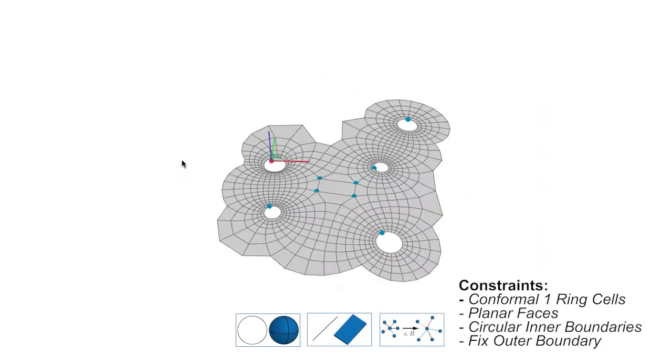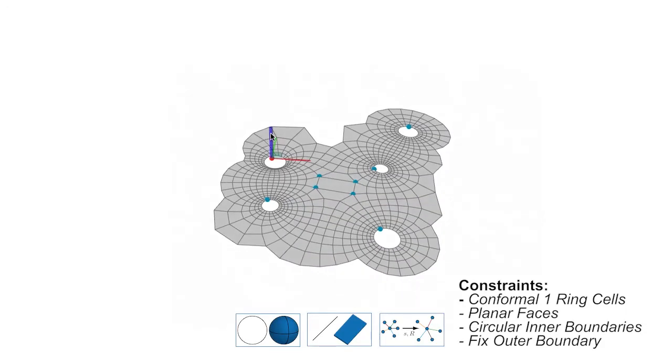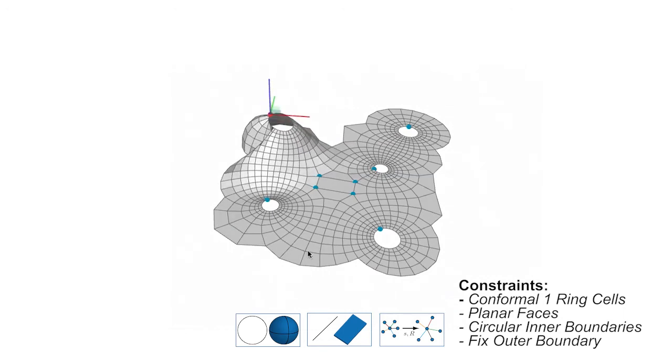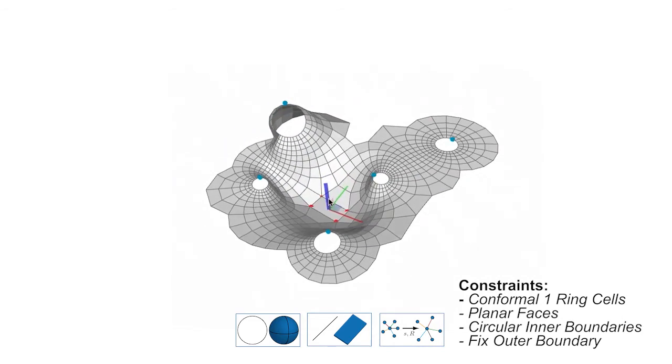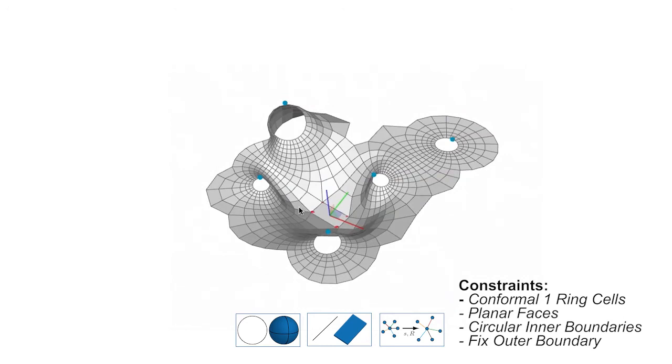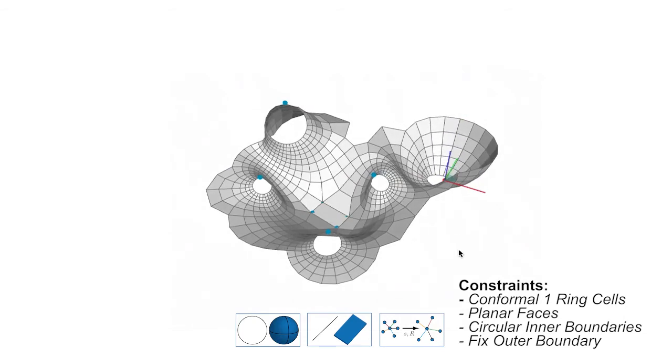We show several examples for applications in architectural design. This demo shows the interplay of a number of different constraints. We use a conformal deformation model, but constrain the quadrilateral faces to remain planar. The outer boundary is fixed, while the inner boundaries can deform, but are constrained to preserve their circular shapes. This enables a fast and intuitive exploration of the space of planar quad meshes. These meshes are of great interest for the realization of free-form glass structures, for instance.